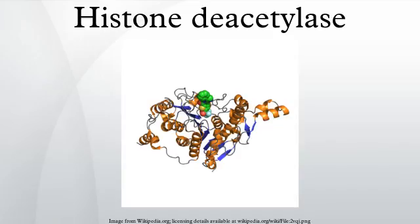Histone tails are normally positively charged due to amine groups present on their lysine and arginine amino acids. These positive charges help the histone tails to interact with and bind to the negatively charged phosphate groups on the DNA backbone. Acetylation neutralizes the positive charges on the histone by changing amines into amides, decreasing the ability of the histones to bind to DNA. This decreased binding allows chromatin expansion, permitting genetic transcription to take place. Histone deacetylases remove those acetyl groups, increasing the positive charge of histone tails and encouraging high-affinity binding between the histones and DNA backbone, thereby condensing DNA structure and preventing transcription.